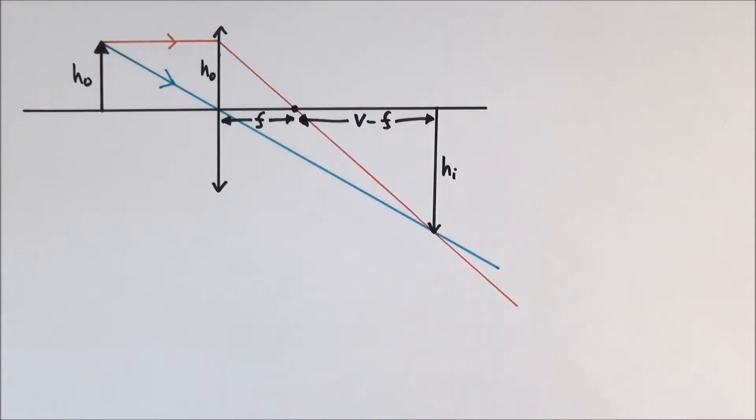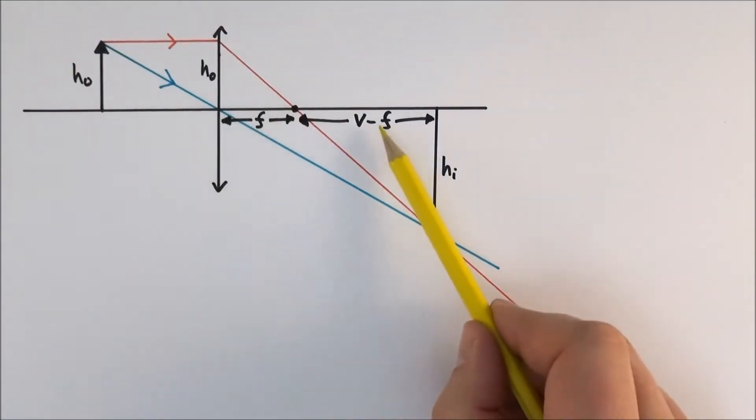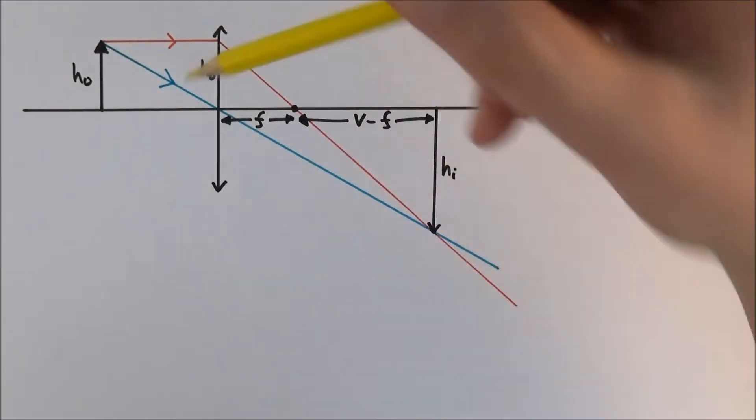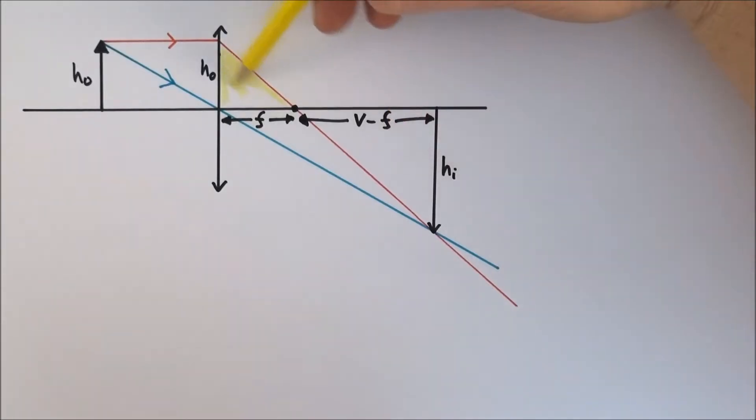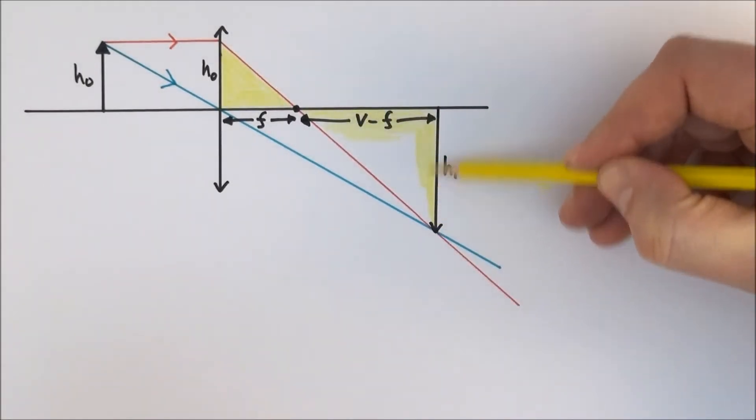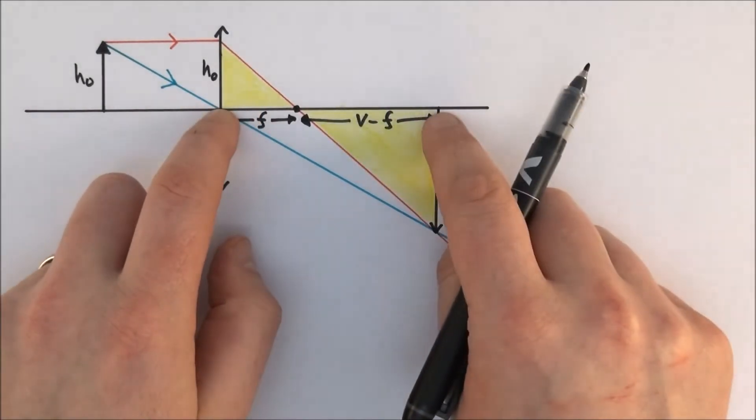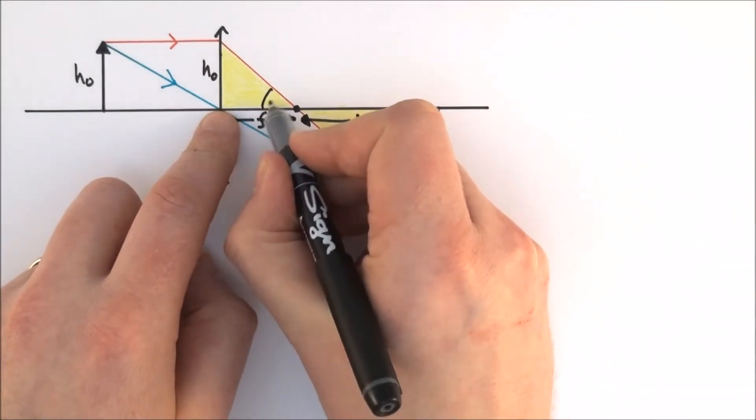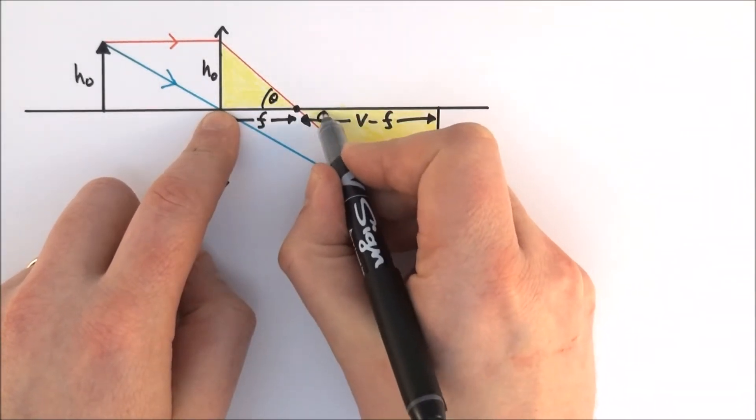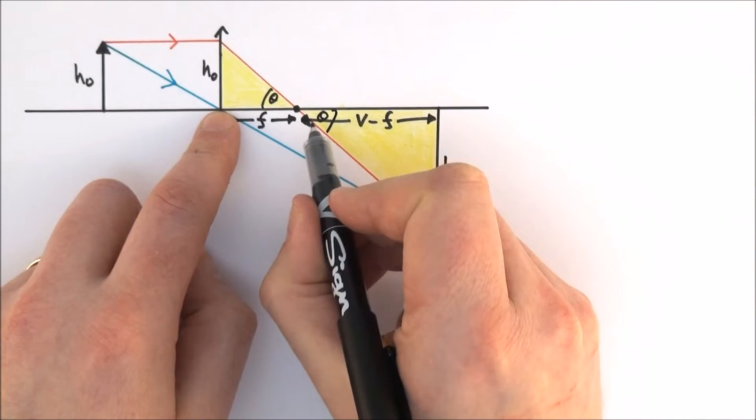Now what I'd like to do is focus on this triangle here and this triangle here so I'm just going to colour them in. These are similar triangles. They're both right angles and this angle in here which I'm going to call theta must be equal to the angle here that's theta as well.